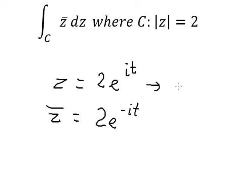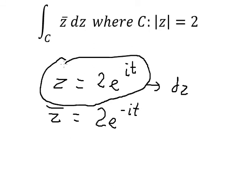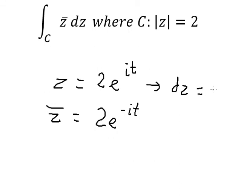dz - we do the first derivative of this one. We get 2i e to the power of it.